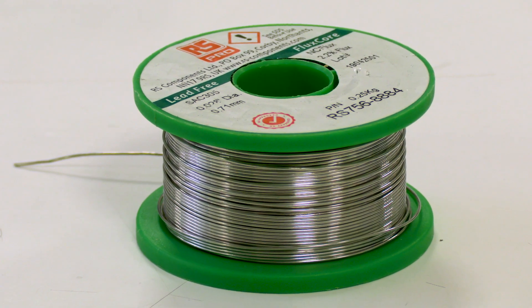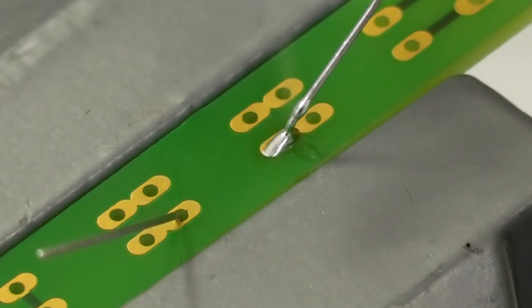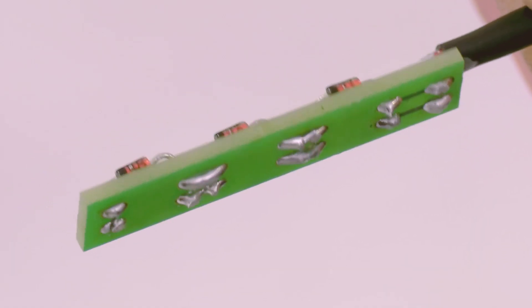Solder is a metal alloy with a low melting point which flows easily when heated. It cools quickly and when solid gives good electrical conductivity between metal surfaces.